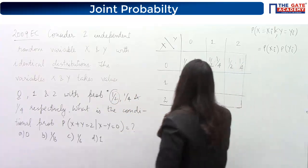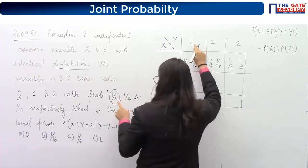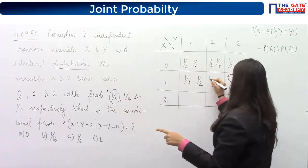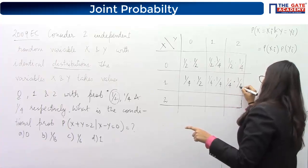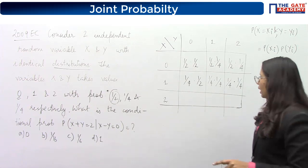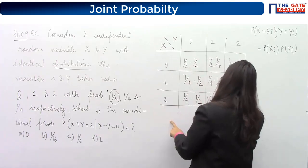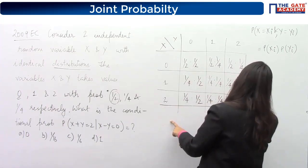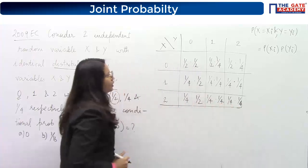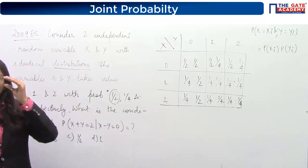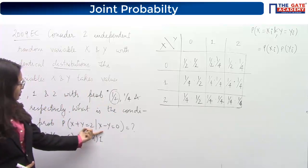Filling in the rest of the table: P(X=1, Y=0) = 1/4 × 1/2; P(X=1, Y=1) = 1/4 × 1/4; P(X=1, Y=2) = 1/4 × 1/4; P(X=2, Y=0) = 1/4 × 1/2; P(X=2, Y=1) and P(X=2, Y=2) follow the same pattern. You multiply the respective marginal probabilities because X and Y are independent.